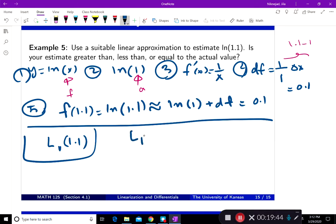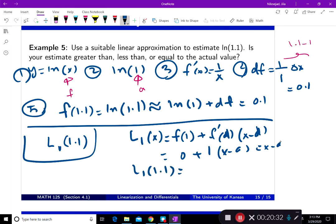And so linearization at 1 of x is equal to f at 1, which is A, plus f prime at A times x minus A. A is 1, f of 1 is 0, f prime of 1 is 1, x minus 1, x is 1.1. So L1 of 1.1 is going to be 0.1. And that's the approximation, and these two values match.